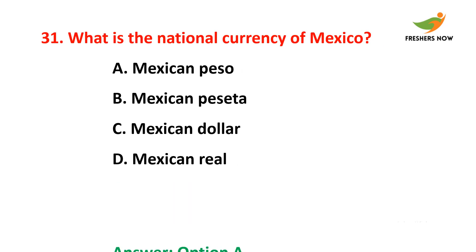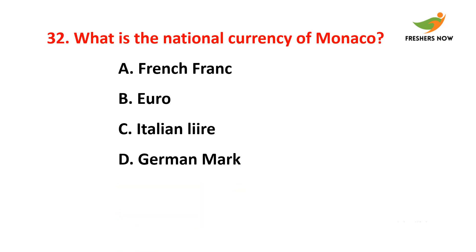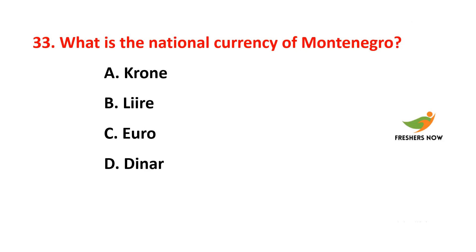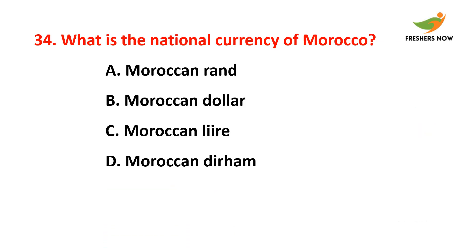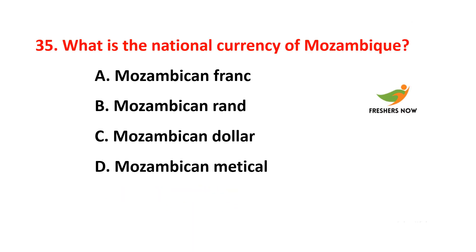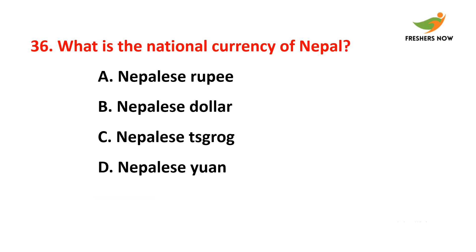Twenty-ninth question: What is the national currency of Malaysia? The answer is option D — Malaysian ringgit. Thirtieth question: What is the national currency of Maldives? The answer is option C — Maldivian rufiyaa. Thirty-first question: What is the national currency of Mexico? The answer is option A — Mexican peso.